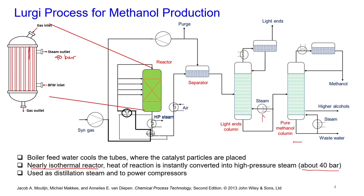The high pressure steam generated can be used in the distillation process and also to supply heat for the compressors. There are multiple compressors in the process, and the heat of reaction recovered through the steam outlet can generate power for these compressors. This is the key advantage of the Lurgy process.